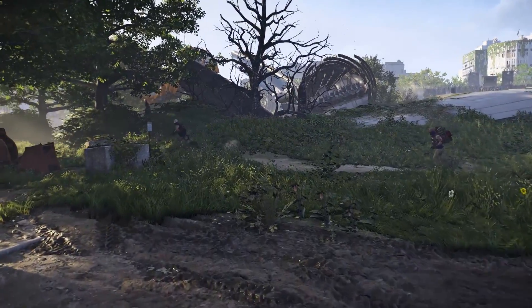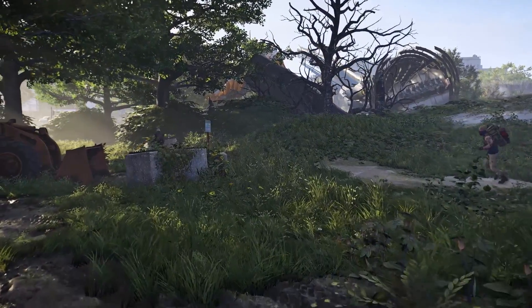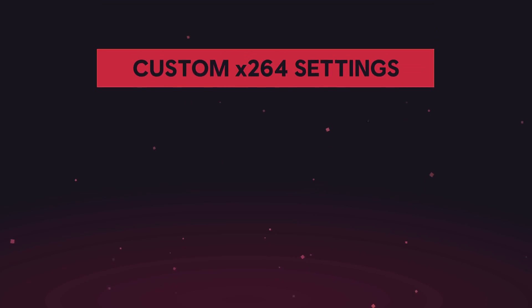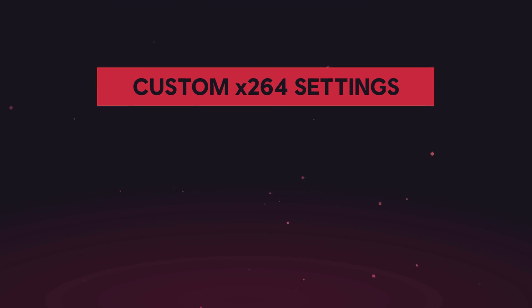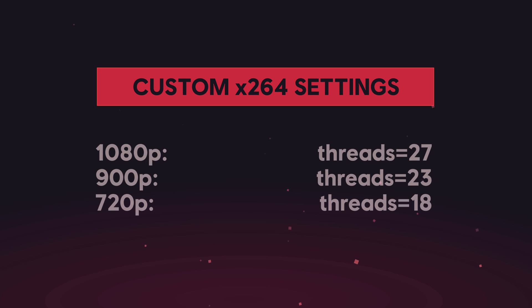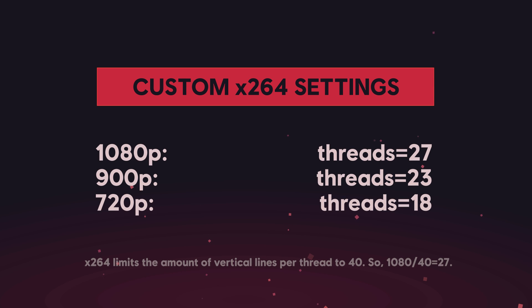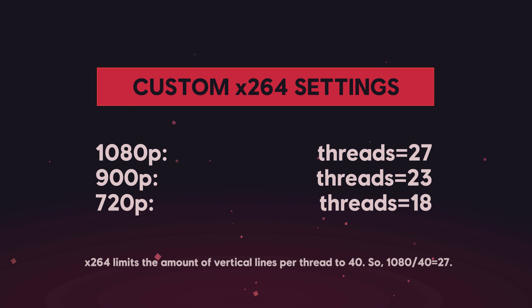We don't want to tread too deep into how the X264 renderer works, but there's a little bit of information you might need to know when setting up a stream. Since our target is 1080p, we're actually using 27 threads in our custom X264 settings. This does mean that for a 720p stream, you'd be best to use 18 threads.